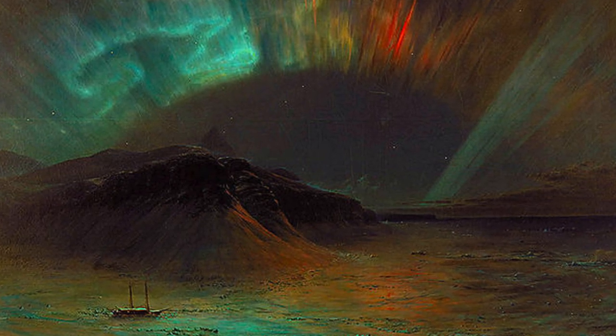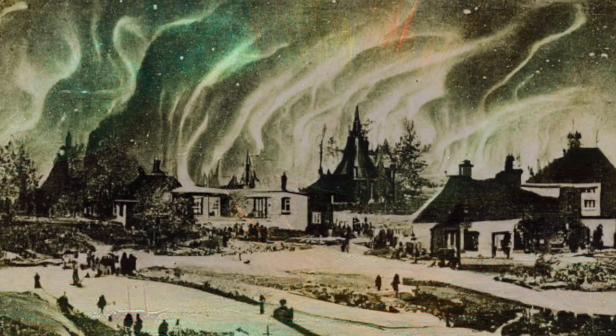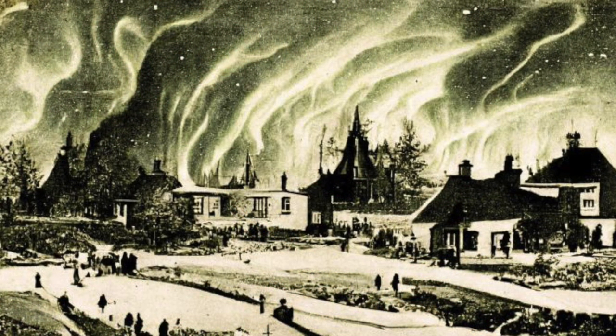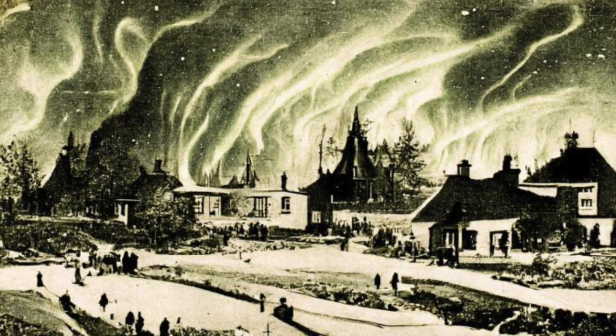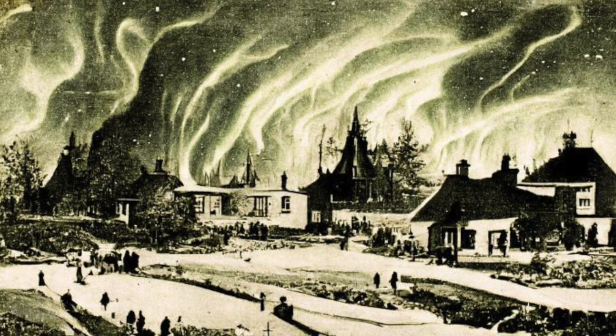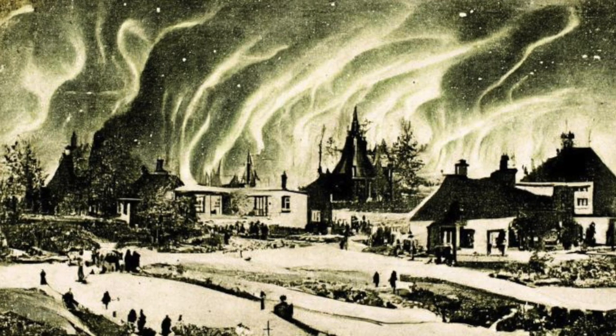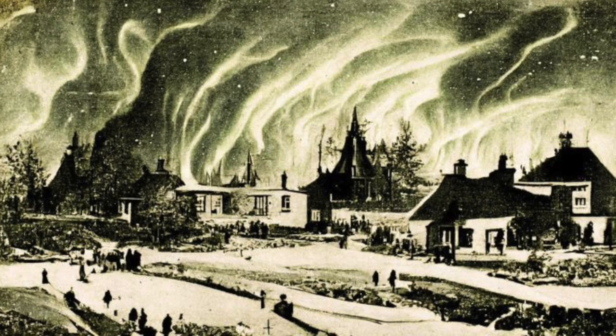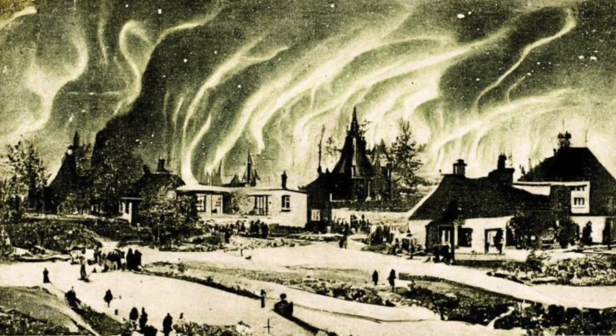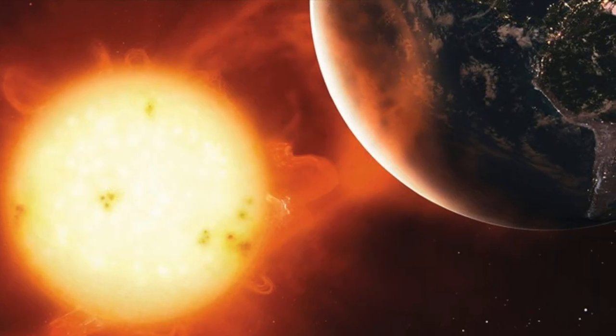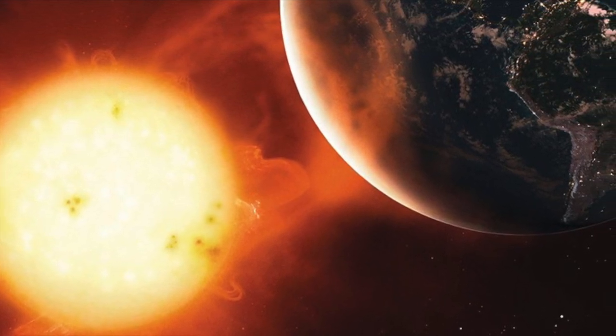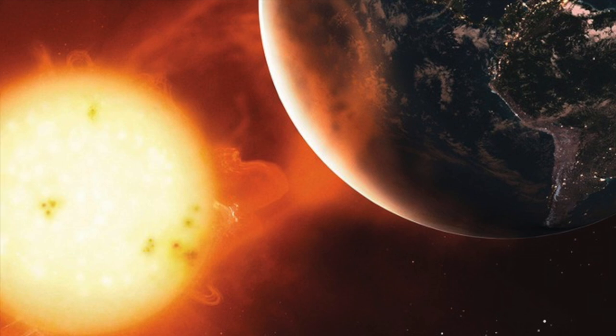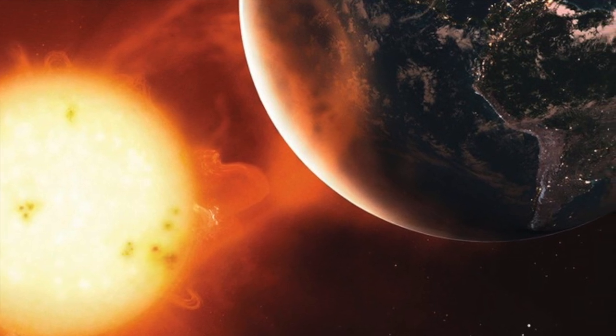Auroras could be seen as south as the Caribbean. They were also seen in Mexico, Colombia, Japan, Hawaii, China and Australia. The glow was so bright that it woke gold miners in the Rocky Mountains who thought it was the morning. Telegraph stations broke down all over Europe and North America, many of them catching fire and giving electric shocks to operators.